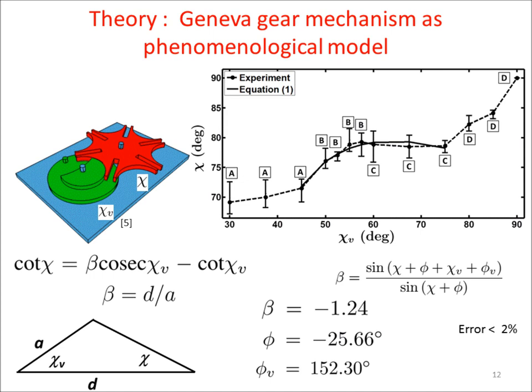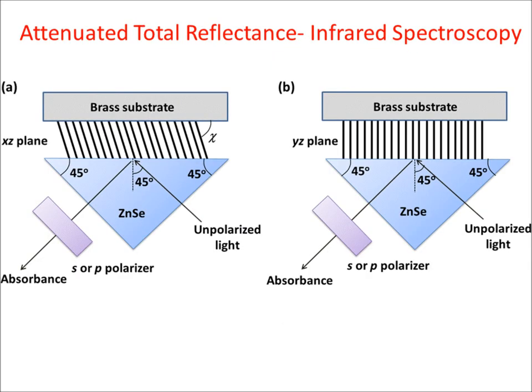The dependence of chi on chi-v is reminiscent of the conversion of continuous rotation into intermittent rotary motion by the Geneva gear mechanism. In the figure, chi-v and chi are the rotation angles of the green driver and the red slotted wheel, respectively. Since this is a first model of this kind, the values of the unknowns are determined by fitting the experimental data to the phenomenological model. A comparison of the fit is overlaid on the figure.